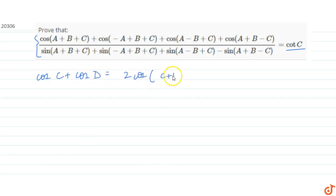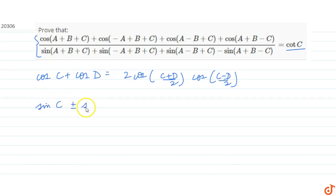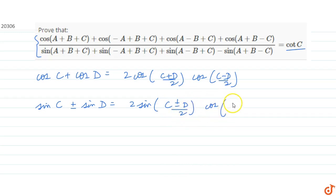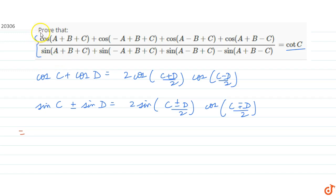And sin(C) ± sin(D) equals 2 sin((C±D)/2) into cos((C∓D)/2). Using the cosine identity in the numerator and the sine identity in the denominator, we now apply these identities to the expression.